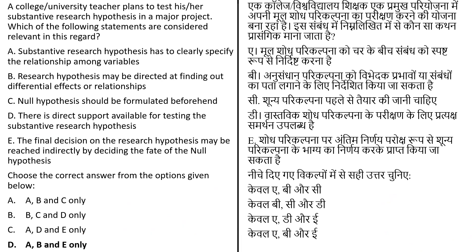The correct answer is option D, meaning statements A, B, and E are correct: substantive research hypothesis has to clearly specify the relation among variables; research hypothesis may be directed at finding out differential effects or relationships; and the final decision on the research hypothesis may be reached indirectly by deciding the fate of the null hypothesis.